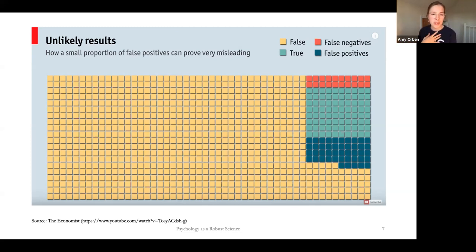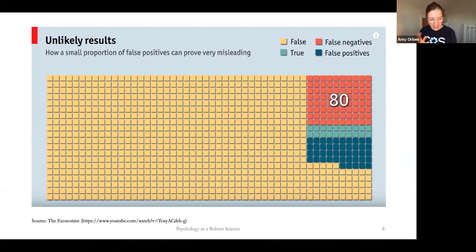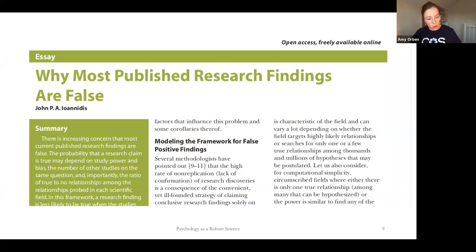Naturally, we might have way worse power. So I sit in a neuroimaging institute, and maybe neuroimaging studies only have 20% power. That makes it a lot worse. That means that actually only 30% of the true findings are actually true positives. So the vast majority of scientific findings might be false.